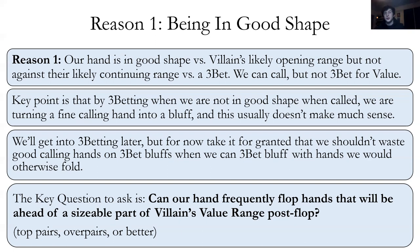So we end up calling a bunch of our okay hands that do well enough. What does it mean for a hand to do well enough? It means we flop hands that will be ahead of a sizable part of villain's value range post-flop. When they raise under the gun, their value range — their good hands — are top pairs, pair of aces, overpairs like pocket aces on a jack-seven-four board. We want to be able to flop hands that can beat those hands.